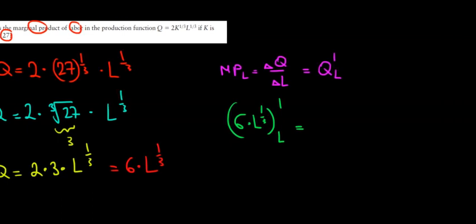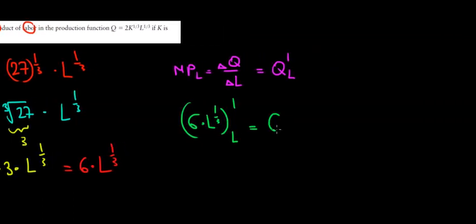The rest is a constant. 6 is a constant, so we keep it like that. We're differentiating l to the power of 1 over 3. Recall the power rule of derivatives. We take the power down and then we'll have l to the power of 1 over 3 minus 1.